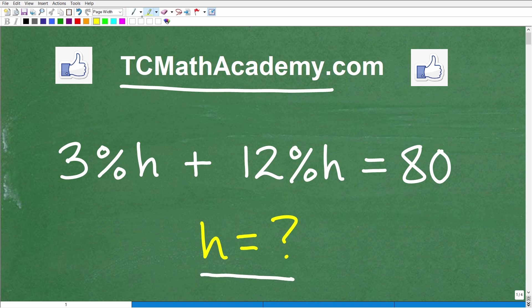So what is the equation? Well, it's a little interesting because we have the percent symbol in here, but nevertheless, this is an algebraic equation. We have 3% of h plus 12% of h is equal to 80. So this is the equation, and we're trying to solve for the variable h.